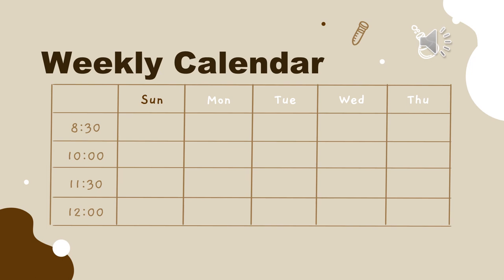Moving on to our weekly calendar — we're going to have five classes per week that are aligned in a BC with varied sources and content.